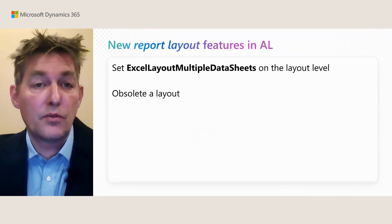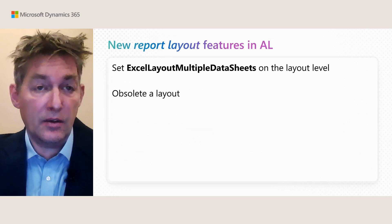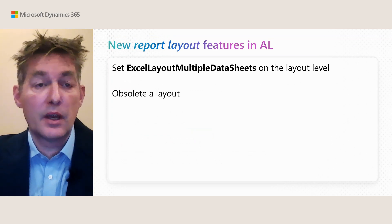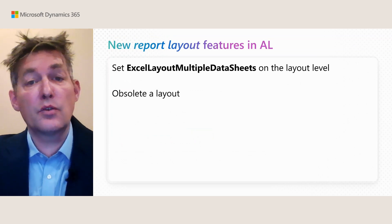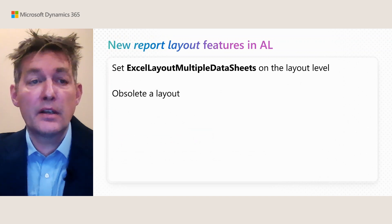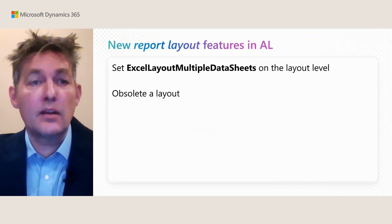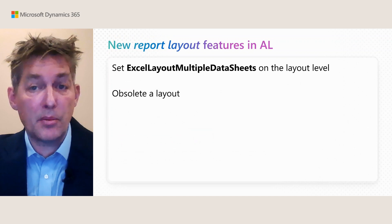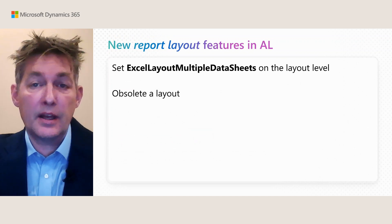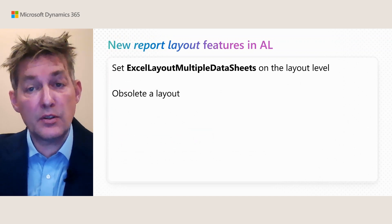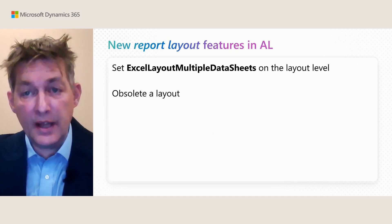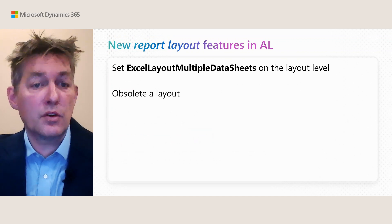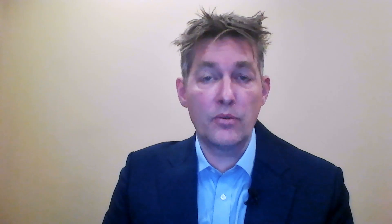The new things you can do from AL, from VS Code, with report layouts: first, you can override any choice of the Excel layout multiple data sheets property that has been set on the report — you can now set that on the layout level. Second, you can now obsolete a layout.